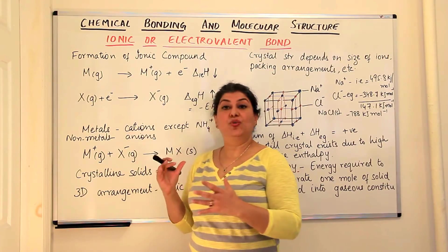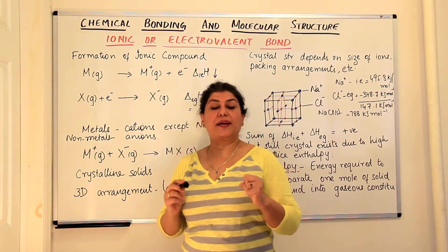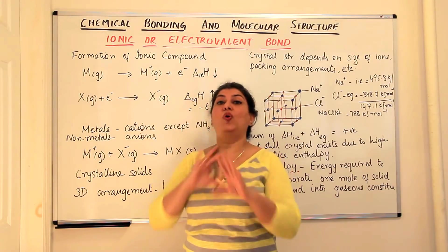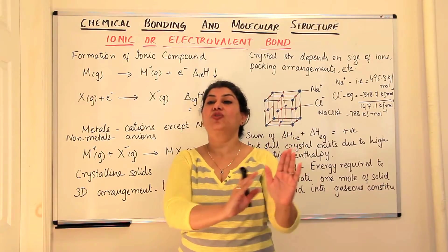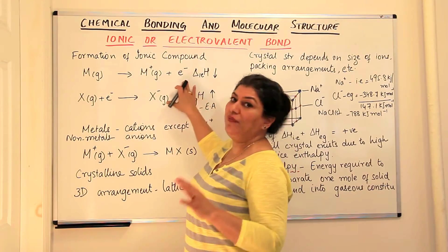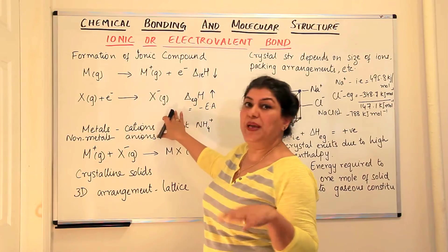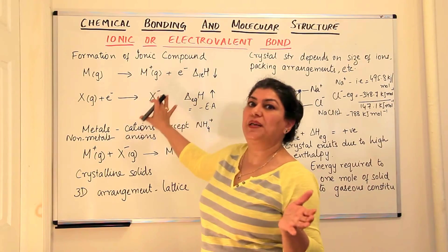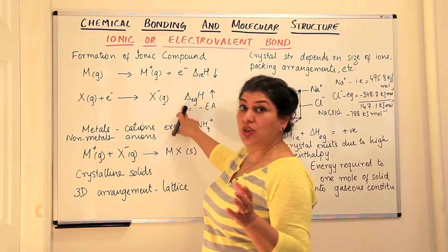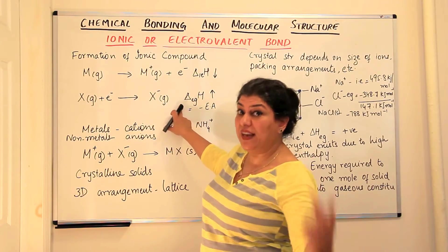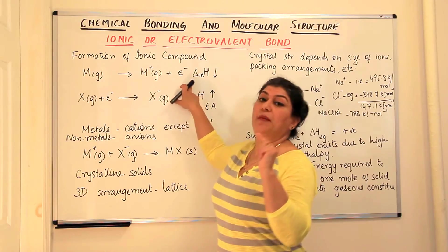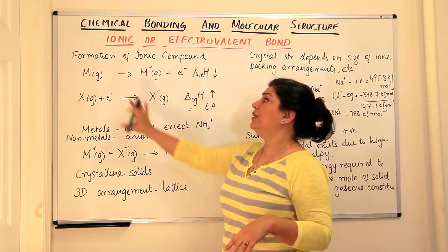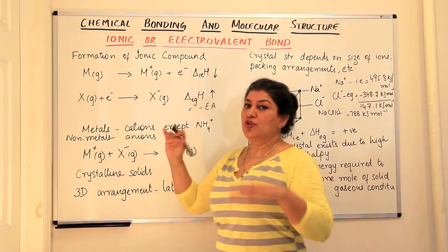For stability to be acquired, the formation of the positive ion and the negative ion on the whole should be exothermic. Even if the first step — cation formation — is always endothermic, the second step should be exothermic, and the amount of heat given out should be more than the amount of heat absorbed in the first step. Only then, logically, should the compound be formed.